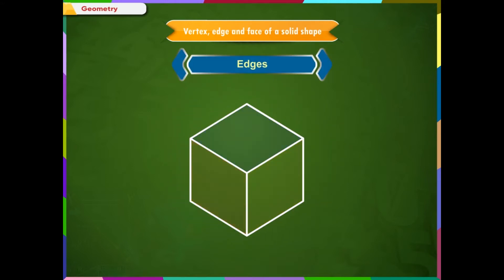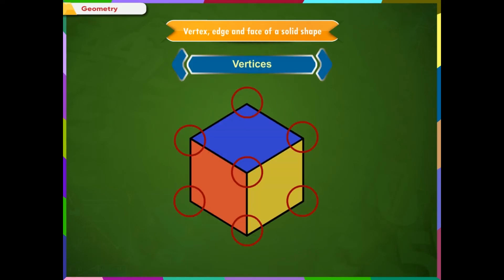Edges: Line segments common to intersecting faces of a polyhedron are known as its edges. Vertices: Points of intersection of edges of a polyhedron are known as its vertices.